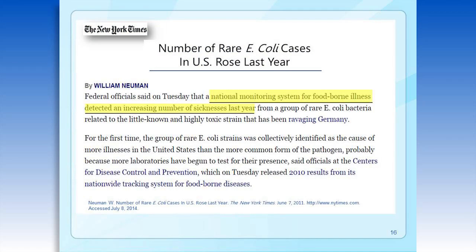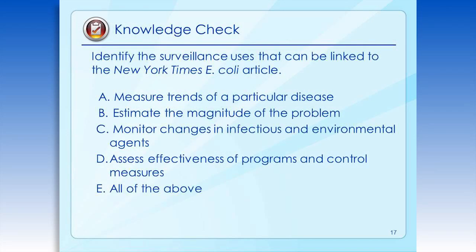This is part of an article on the number of rare E. coli cases in the U.S. rising last year. Notice that these results came from the National Monitoring System for Foodborne Illness. Which surveillance uses can you link to this article? Do we measure trends of a particular disease? Do we use it to estimate the magnitude of the problem? Do we use it to monitor changes in infection or environmental agents? Do we use it to assess the effectiveness of programs and control measures? You can see that essentially it's all of the above.